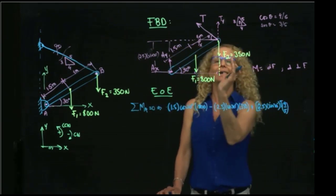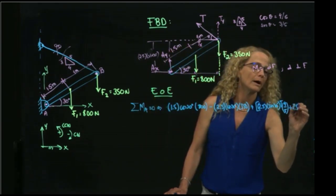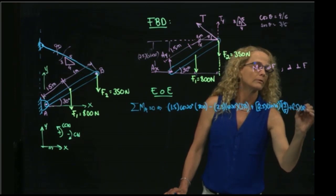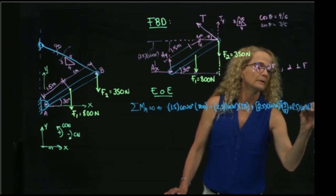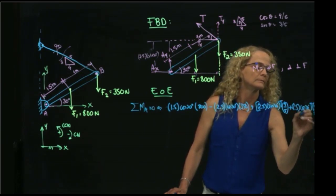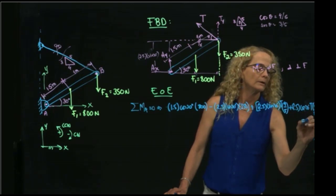So that will be 2.5 cosine of 30, and the moment will be also positive, 2.5 cosine of 30, T times 3/5. And all that will be equal to zero.